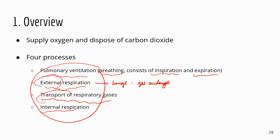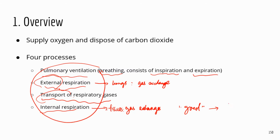The last step is internal respiration, which is again a gas exchange, but this time it happens at the tissues. The blood brings in oxygen and the cells pick up oxygen, but the cells also drop off carbon dioxide, which is picked up by the blood. So after internal respiration, the oxygenated blood — the good blood — now becomes deoxygenated, very low in oxygen level.